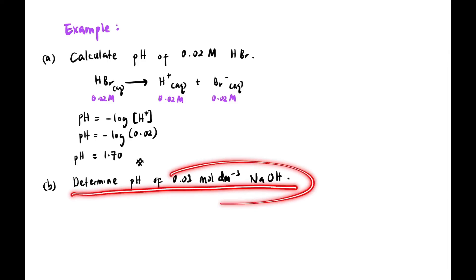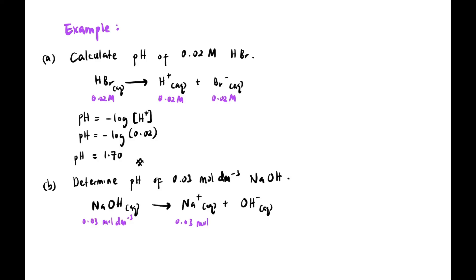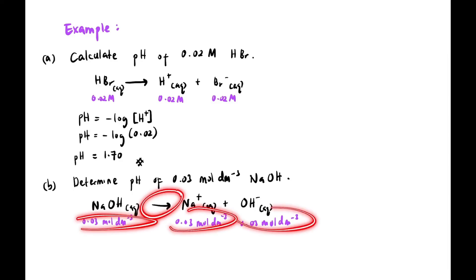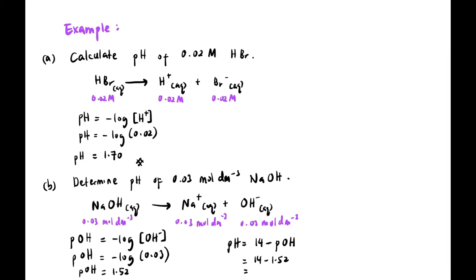Next: Determine the pH of 0.03 mol dm⁻³ NaOH (strong base). Step 1: NaOH → Na⁺ + OH⁻. So [OH⁻] = 0.03 mol dm⁻³. pOH = -log(0.03) = 1.52. Then pH = 14 - 1.52 = 12.48.